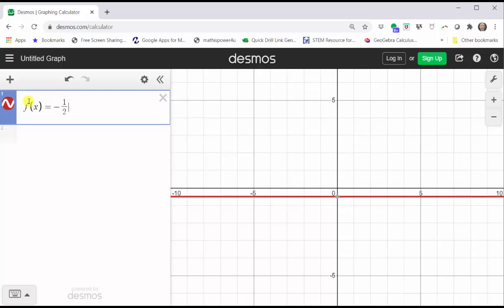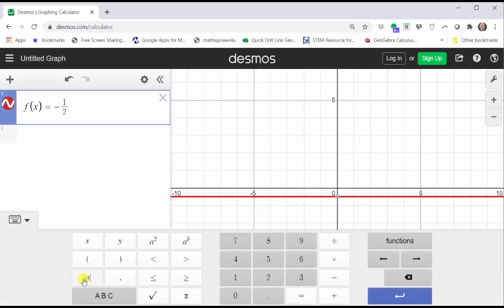For absolute value, we enter abs or go to the Desmos keypad by clicking the Show Keypad button and the absolute value button is here.